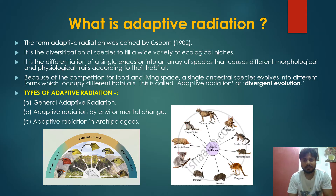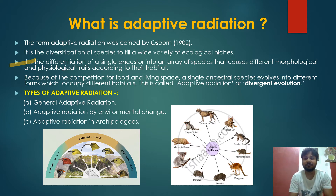First of all, what is adaptive radiation? This term was coined by Osborn in 1902. It is the diversification of species to fill a wide variety of ecological niches. It is the differentiation of a single ancestor into an array of species that develop different morphological and physiological traits according to their habitat.